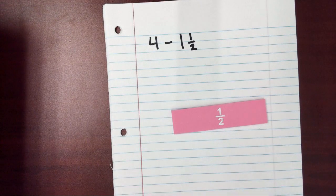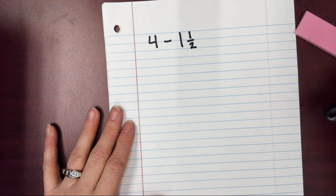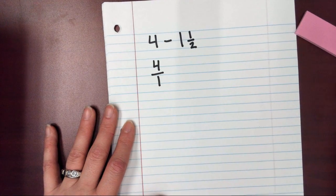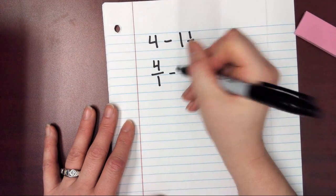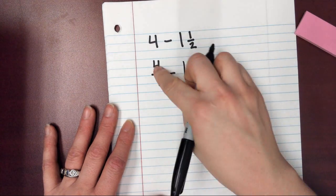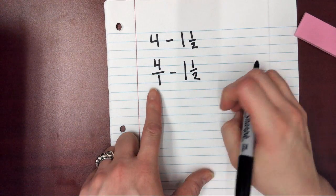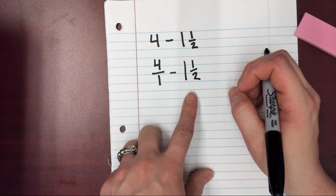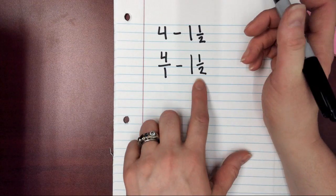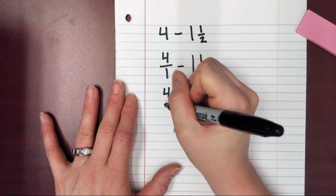So the first thing I need to do is make 4 into a fraction. The simplest way to do that is to write it as 4 over 1. And then I'm going to keep my minus sign. And then I'm just going to write down 1 and 1 half. So now I have an improper fraction and I have a mixed number.